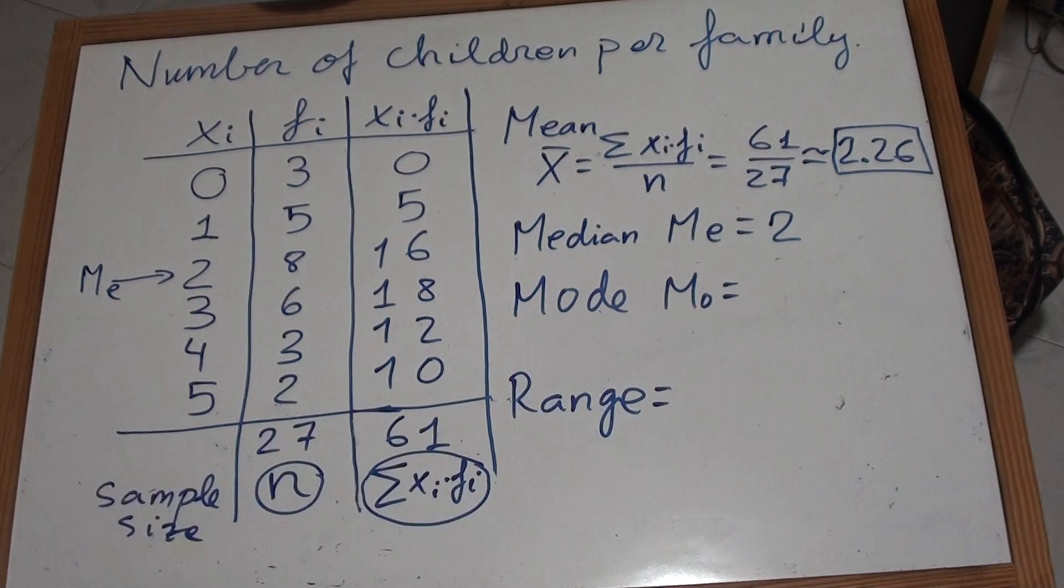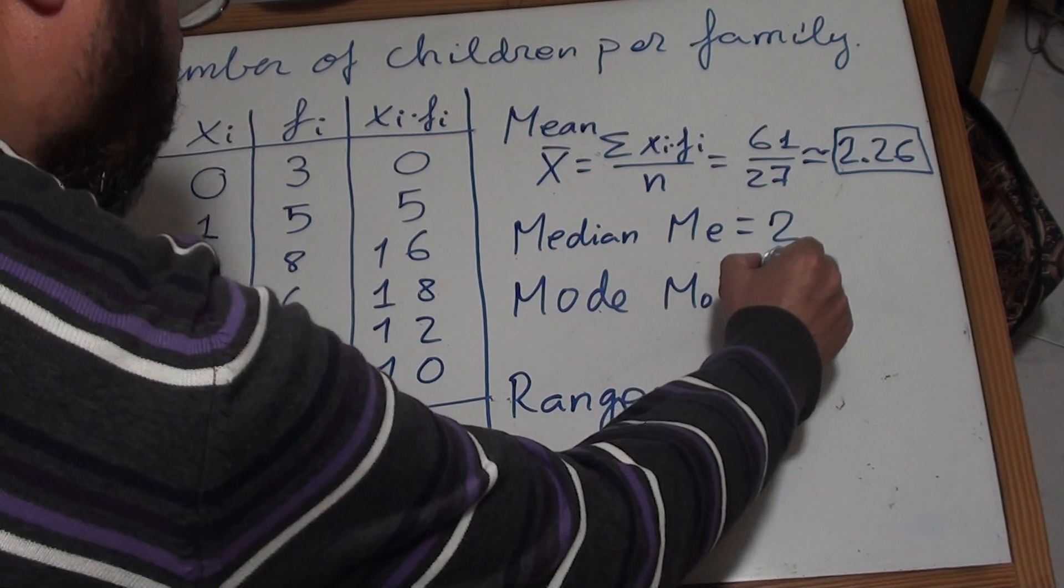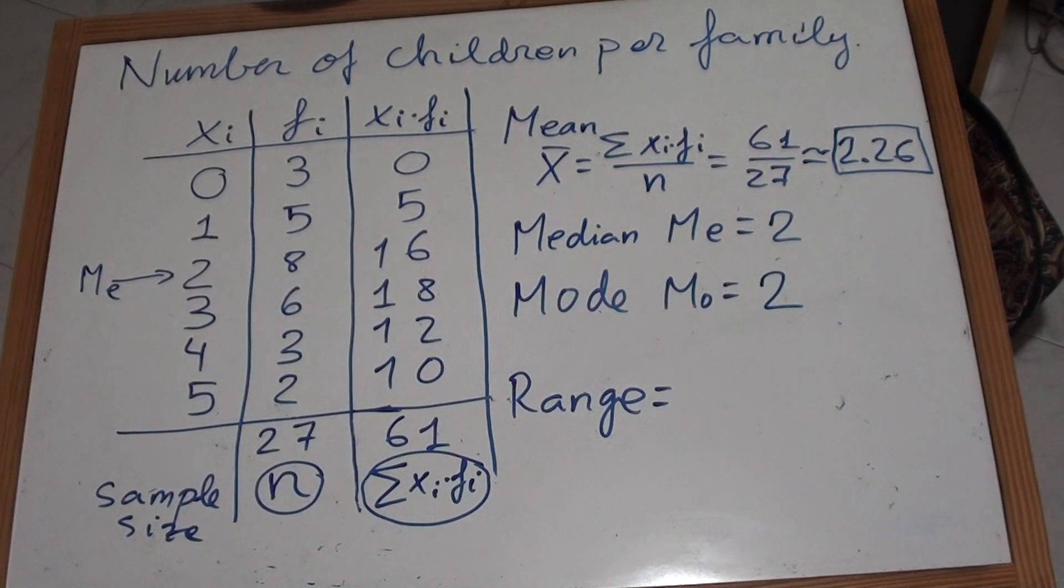And the mode - the mode is easy. The mode is the most repeated number. In this case, it is 2. 2 has the highest frequency, so that's the mode, 2.